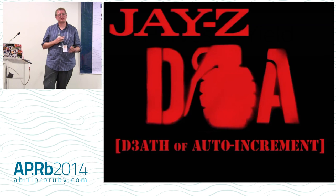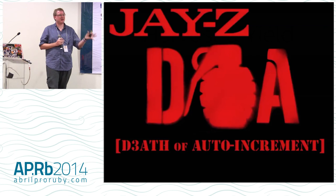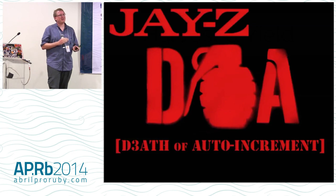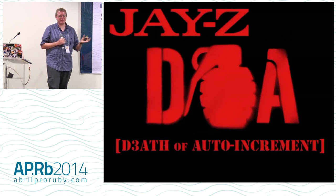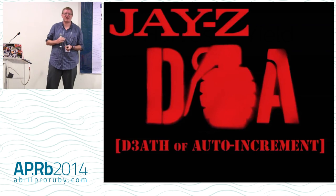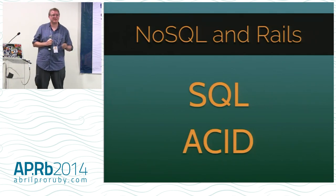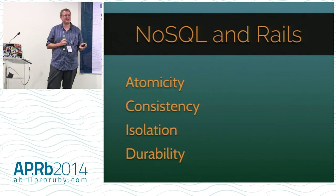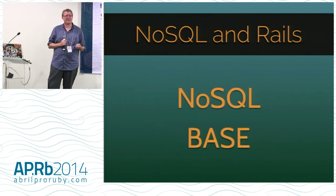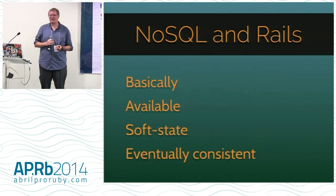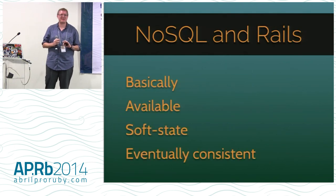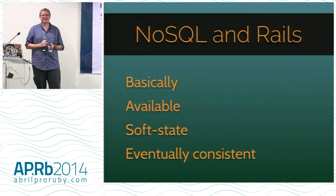One big problem Twitter had: originally when you got a new tweet, it would take the ID of the previous tweet, add one, and put that on your tweet. The problem is once tweets come in fast enough, the time to take the previous ID and add one is longer than you have before the next tweet comes in. So they had to find a different way of assigning a unique number to every tweet — they got rid of auto increment. SQL is ACID — atomic, consistent, isolated, and durable. With NoSQL you have BASE — the opposite of ACID — basically available, soft state, and eventually consistent.